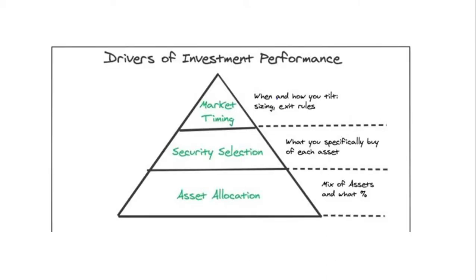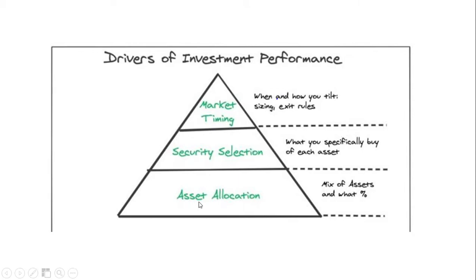Asset allocation is about what percentage to invest in gold, equity, international equity, etc. Security allocation is more specific — within equity, where should you invest; in bonds, where should you invest. Market timing is something left to your own discretion. People say they can time the market but it's really not possible. These are the three basic rules we'll be covering in this series.